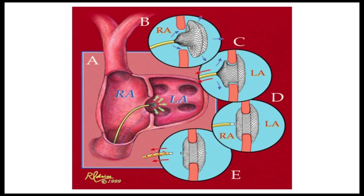Again, innovation has helped us in this regard. This is an Amplatzer device that can actually close an atrial septal defect through the peripheral vein, in this case the femoral vein. This cannot always be used, but there are some conditions and some types of atrial septal defects in which one can use this Amplatzer technique. It's a very good technique and has worked quite well, especially in those patients that have rather small atrial septal defects.